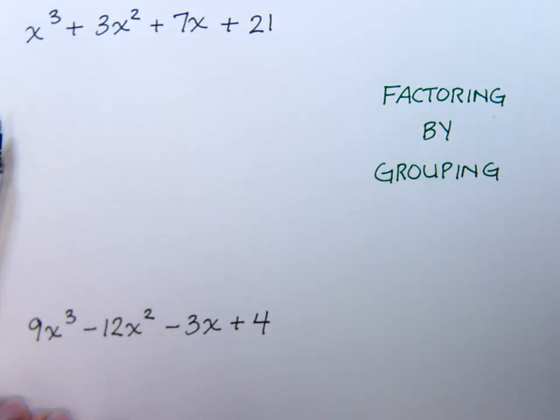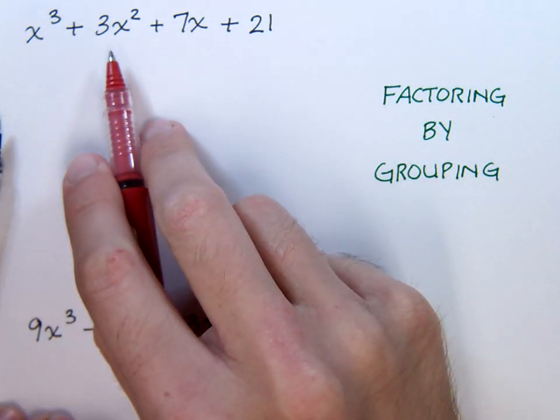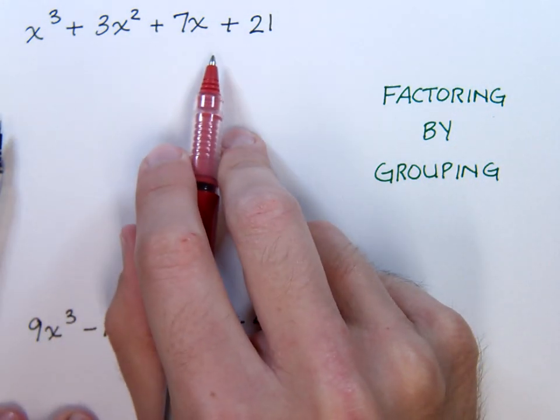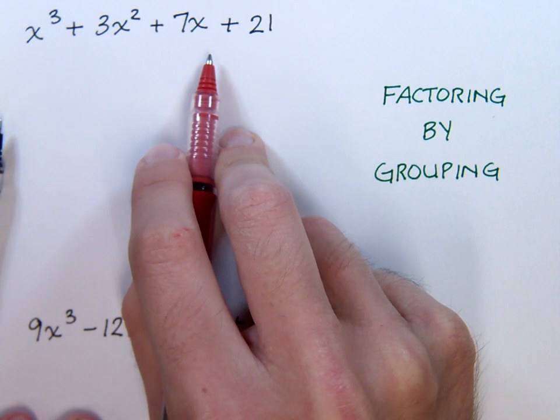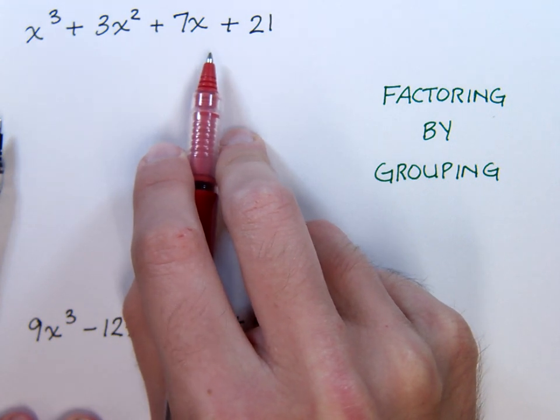In this video, we want to look at problems dealing with factoring by grouping. Remember that factoring by grouping requires you to have four terms so that you can actually create your groups, find the greatest common factor for each group, and then finish the job.